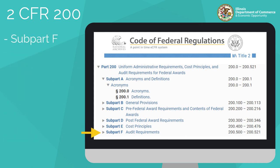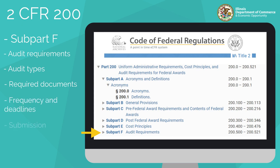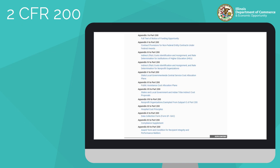Subpart F outlines standards to ensure constant and uniform audits of grantees. This includes audit types, audit requirements based on type, frequency and deadline of audits, and audit submission. 2CFR 200 also includes 12 appendices that elaborate on grant-related topics such as contract provisions for non-federal entity contracts under federal awards, public assistance cost allocation plans, and more. Grantees may click on any of these topics to view details.